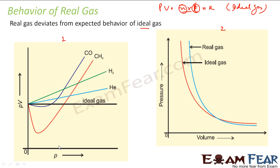Now, when scientists did this experiment for CO (carbon monoxide), methane, hydrogen, and helium, they found a different graph. In case of methane, it dropped and then went down further. In case of helium and hydrogen, it was a straight line. In case of carbon monoxide also, it went down and then down further. This is the experimentally observed behavior of real gases.